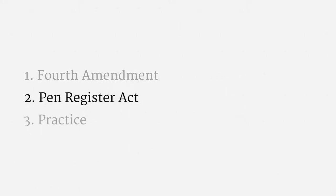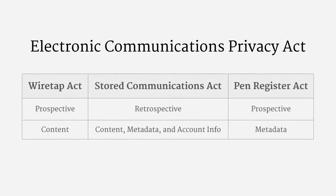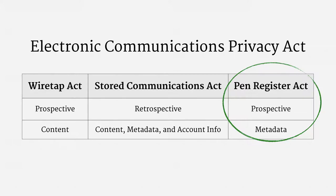Now, on to the Pen Register Act, which is the federal statutory scheme that regulates pen traps. In the last lecture, we looked at the structure of the 1986 Electronic Communications Privacy Act. The Pen Register Act is just part of ECPA — namely, the part that deals with prospective collection of communications metadata. Much like the Wiretap Act, the Pen Register Act establishes a blanket prohibition on pen traps, and like the Wiretap Act, includes some exceptions. One of those exceptions is for a pen trap order, a special type of court order set out in the Pen Register Act.